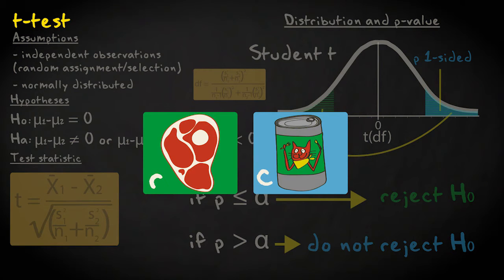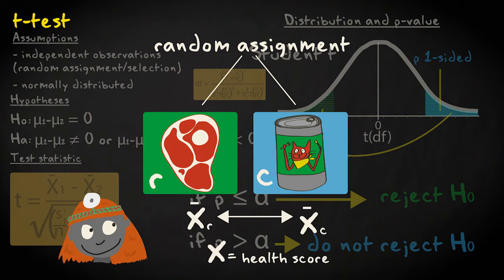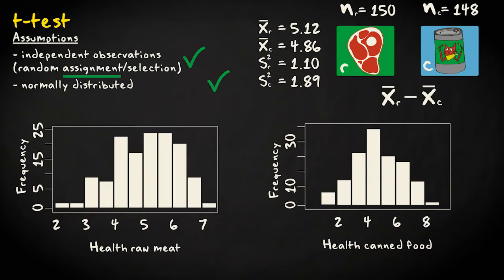Suppose I want to test whether a raw meat diet is healthier for cats than regular canned food. I randomly assign half of my entire sample to a raw meat diet and the other half to a canned food diet. Cat health is measured on a scale between 0 and 10 by a veterinarian. To check whether the groups are normally distributed, I'll look at the histograms of the health scores in each group. These look normal enough.